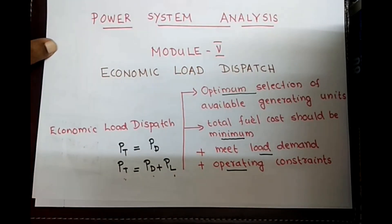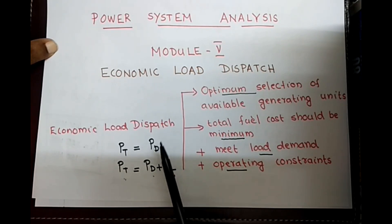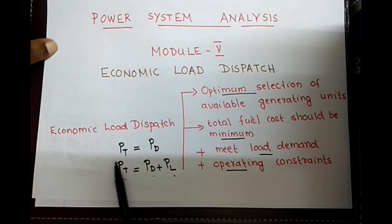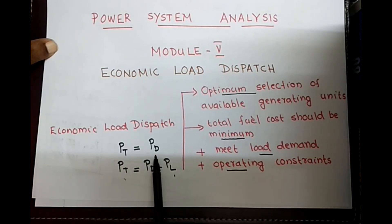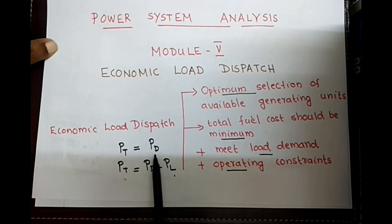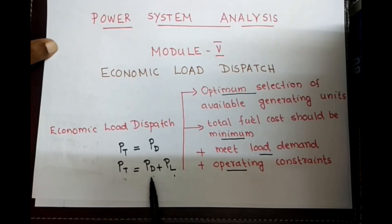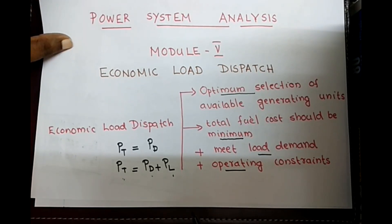The two types are: economic load dispatch neglecting transmission losses, and economic load dispatch including transmission losses. For the first case, neglecting transmission loss, the total power generated PT is equal to PD, the demand power. Including the transmission loss, the total power PT is equal to the demand plus the transmission losses. Let us see the problem.